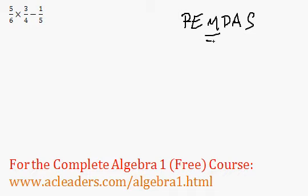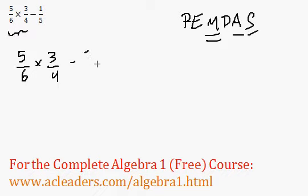That's going to tell us that multiplication happens before addition and subtraction. So that's going to happen first. So we have 5 over 6 times 3 over 4. The 1 fifth or the 1 over 5 just waits here for now before this happens.